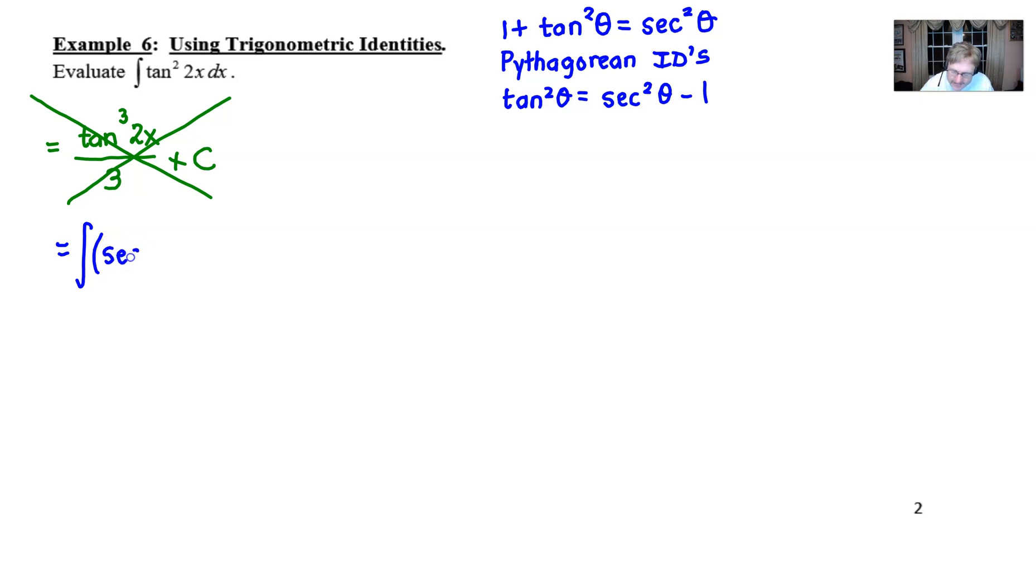Now, as far as the 2x is concerned, that's going to take the place of the theta. It really doesn't matter what the argument is within the function. In this case, 2x is going to travel wherever our theta is. And so we just write it as such. So this is what we're going to integrate.